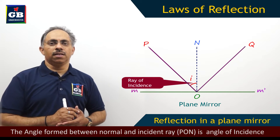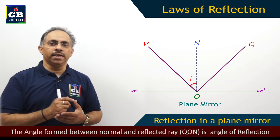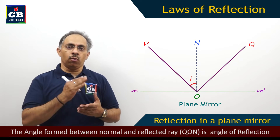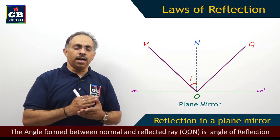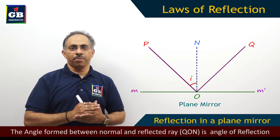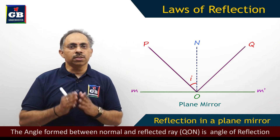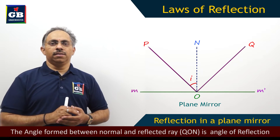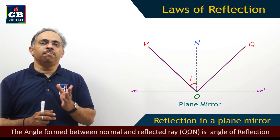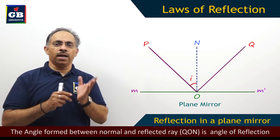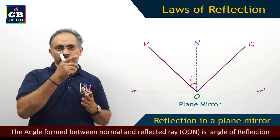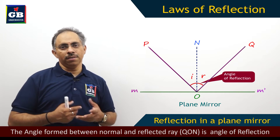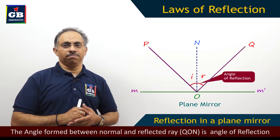Similarly, if you consider the angle between ON and OQ — OQ is the reflected ray — so the angle between ON and OQ, that is angle NOQ, we will call it as the angle of reflection.